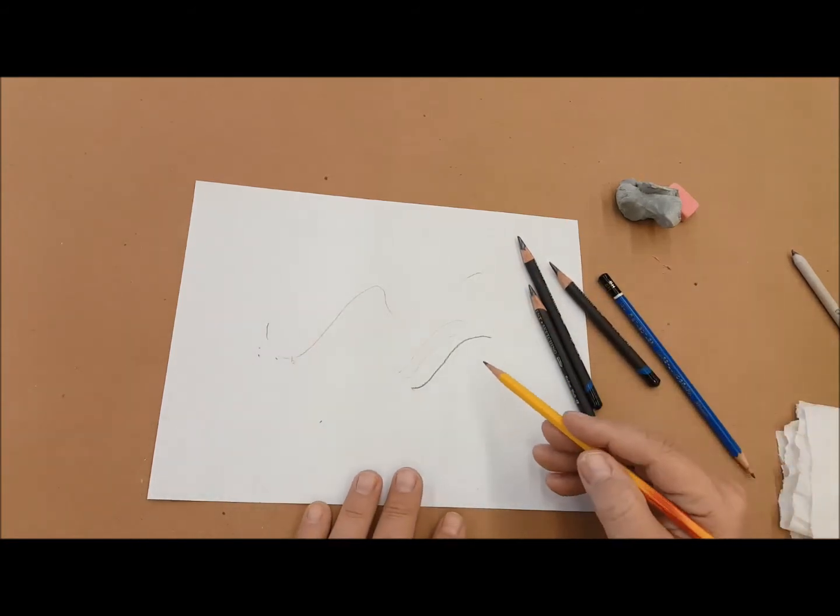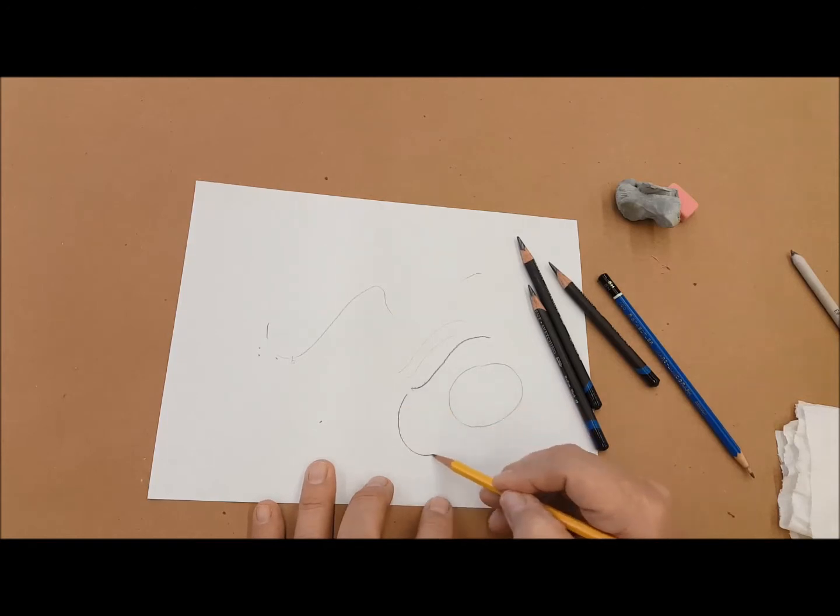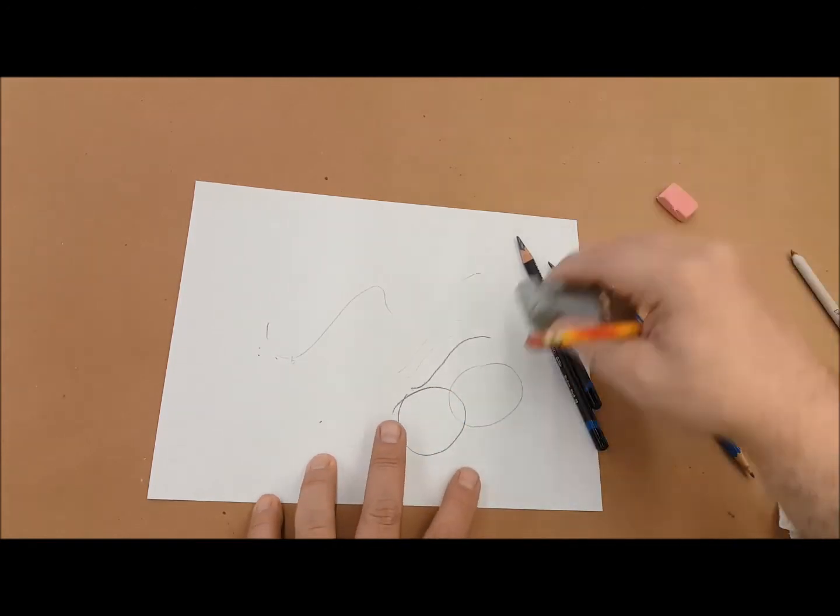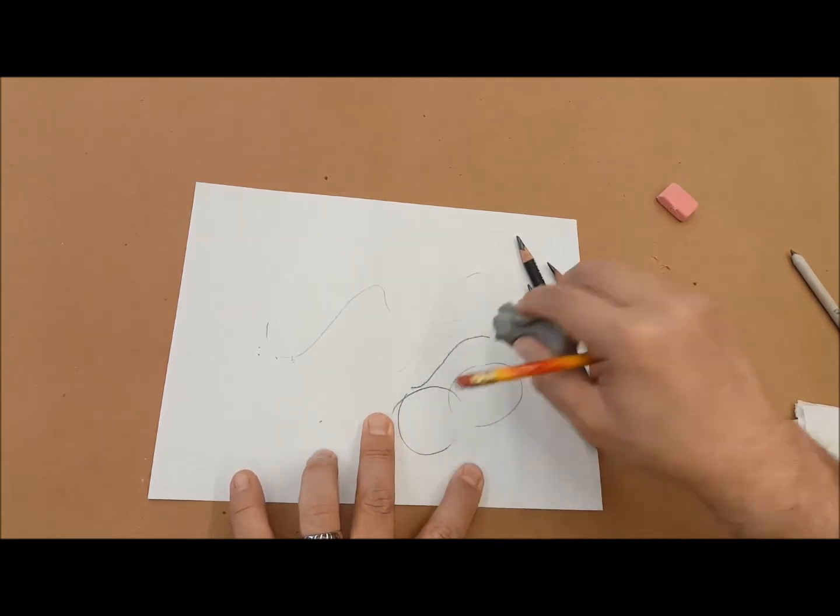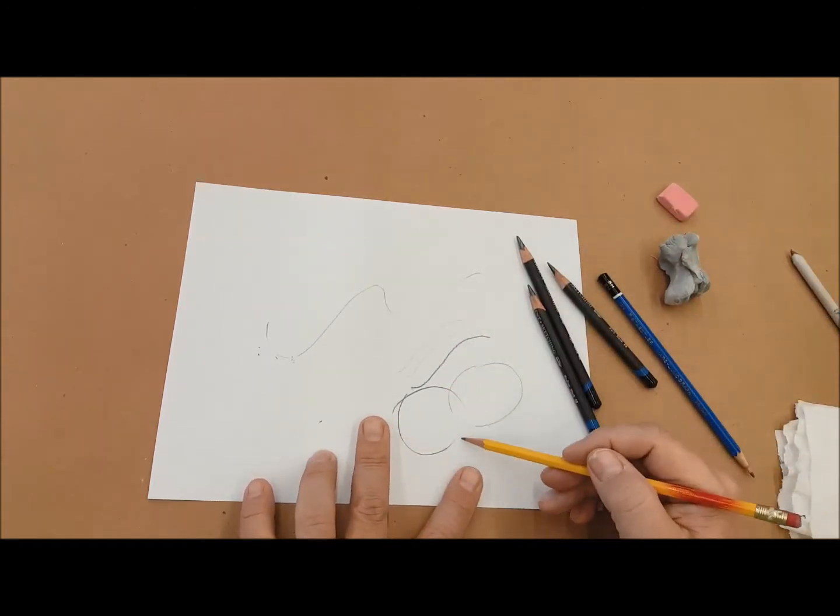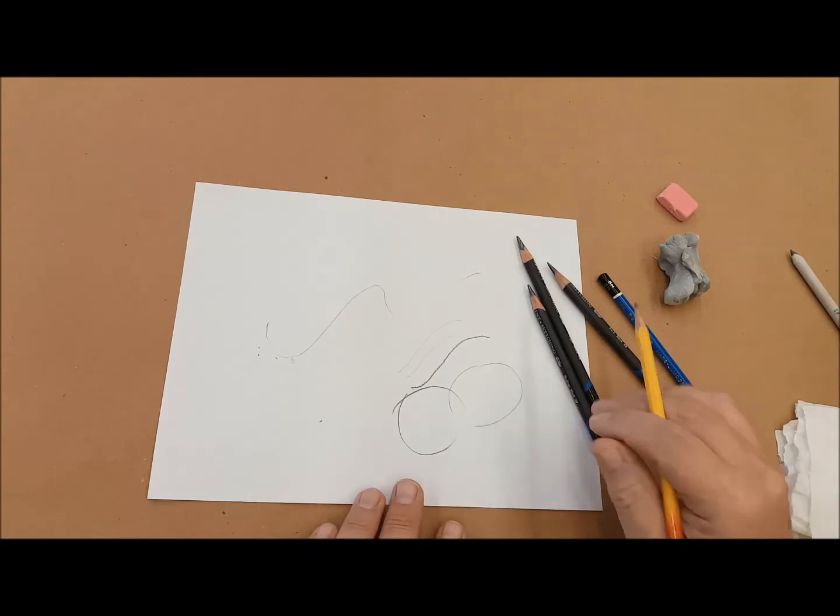When you're using a pencil, you want to try and work relatively lightly, because if you press hard, it's much harder to erase. Even with a good clay eraser, you can see the lighter circle got erased, and the darker one, we can still see a line there. So it's important to work lightly when you're working with pencil.